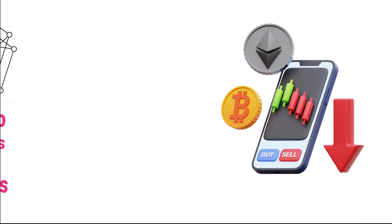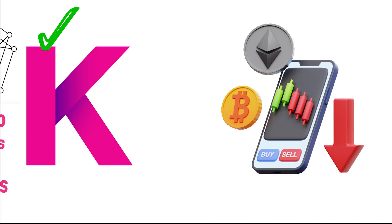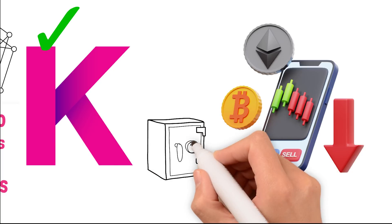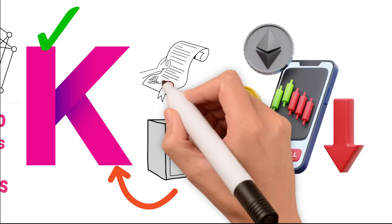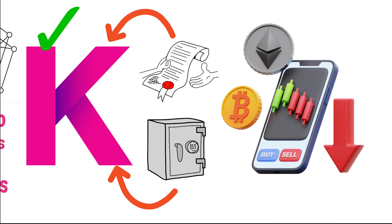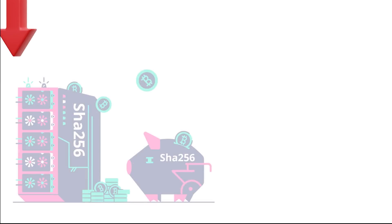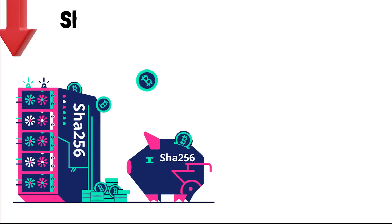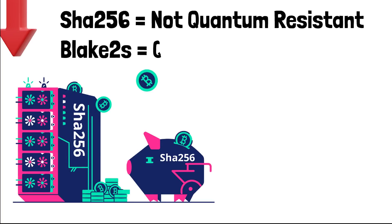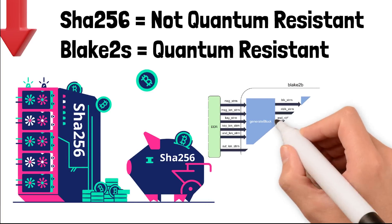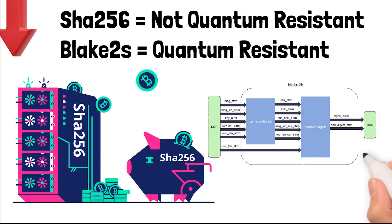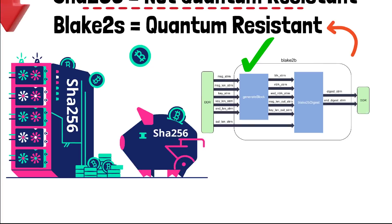To understand why Kadena is so much superior to both Bitcoin and even Ethereum 2.0, I need to explain why the Kadena blockchain took the security of Bitcoin and the smart contracts of Ethereum and merged them into one blockchain. Bitcoin's security comes from its proof-of-work SHA-256 algorithm, which is not quantum resistant — unlike Kadena, which chose to use the BLAKE2s algorithm, which is quantum resistant.